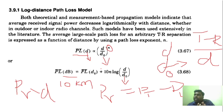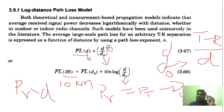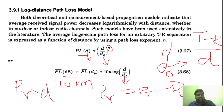This is about the path loss model. N value and D0 value are very very important in calculating the received power. N will also vary and D0 will also vary. This is a simplest explanation of the Log Distance Path Loss model.